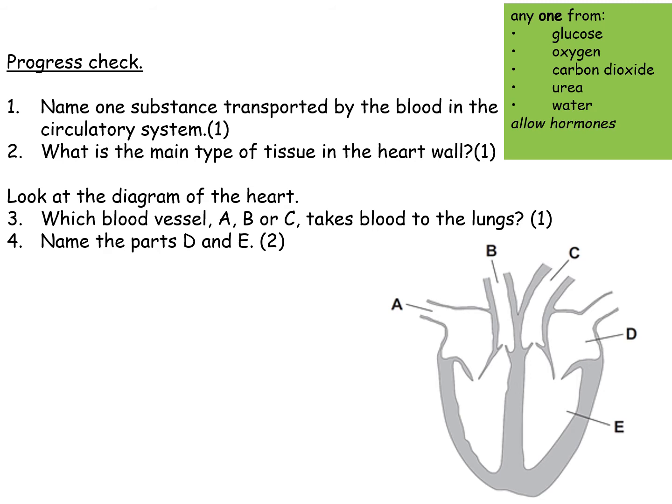Here are the answers. For one substance, a long list of options is acceptable: glucose, oxygen, carbon dioxide, urea, water, or hormones. Please check your spellings, especially of glucose and oxygen, as they tend to be mixed up. The main type of tissue in the heart wall is muscle. The blood vessel taking blood to the lungs is B — as part of your revision, find out the specific name of that artery. Parts D and E: D is the left atrium and E is the left ventricle.